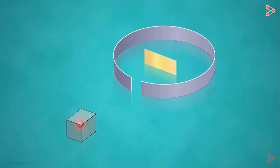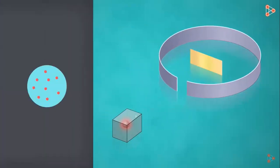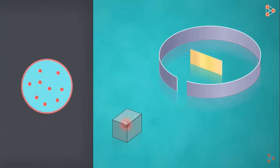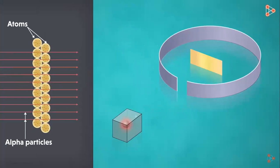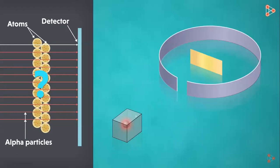The alpha particles were emitted from the element in the box and directly hit the gold foil. Ideally, as Thomson's model suggested, an atom is a sphere of positive charge with negative electrons embedded inside — so the alpha particles were expected to pass right through the atoms and hit the detector straight. Only a very small deviation would probably be acceptable, but Rutherford was astonished to get unexpected results.